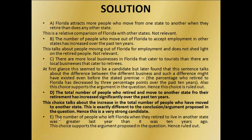Option D says the number of people who left Florida when they retired to live in another state was greater last year than it was 10 years ago. This choice supports the argument proposed in the question, so it is ruled out. Option E says the total number of people who retired and moved to another state has increased significantly over the past 10 years. This is exactly counter to the conclusion argument proposed in the question. Hence this is a very strong candidate and option E is our answer.